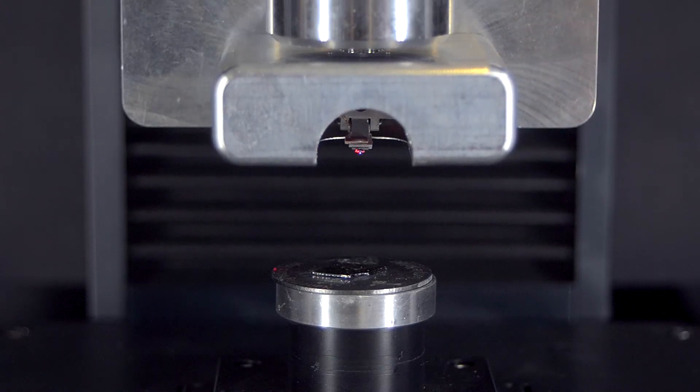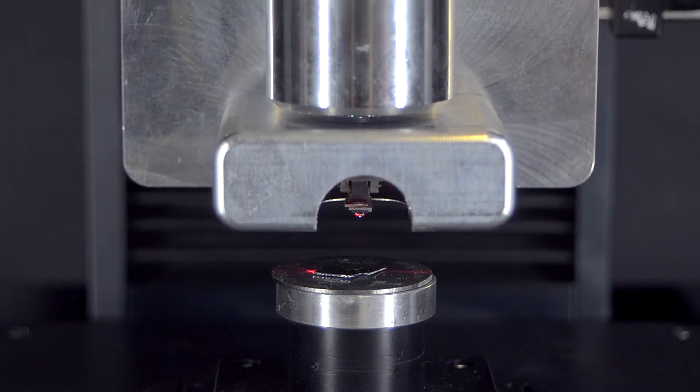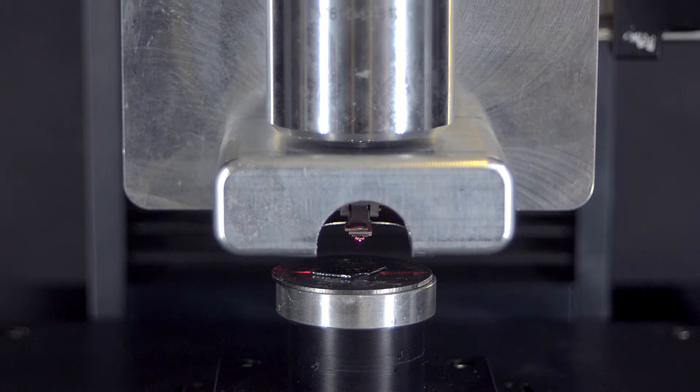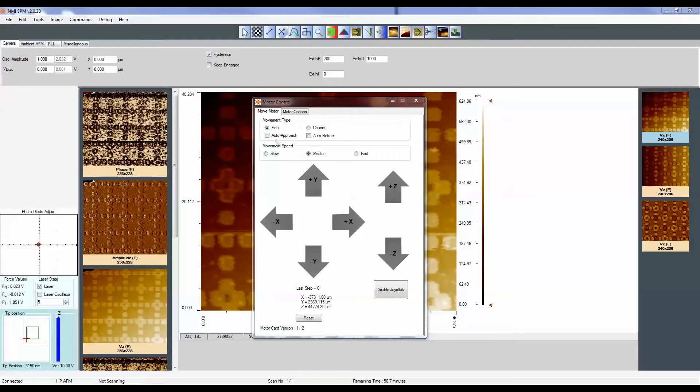Coarsely approach your sample. At this stage, do not let the AFM head touch your sample. When you are close enough, click the Auto-approach checkbox. The HP AFM will automatically find the surface.